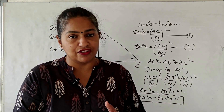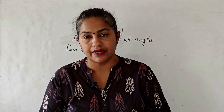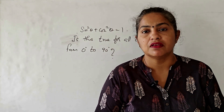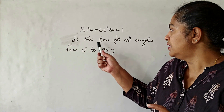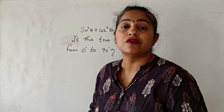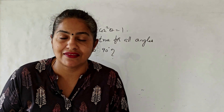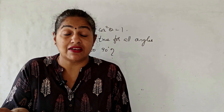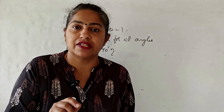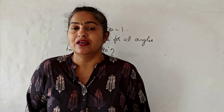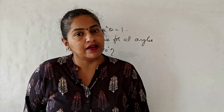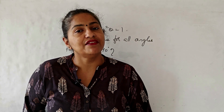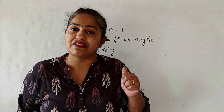Now we have learnt the identities and how to prove them. Let me ask you a question: sin²θ + cos²θ = 1 — is this true for all angles from 0° to 90°? When we say the identities, we just say sin²θ + cos²θ = 1, sec²θ - tan²θ = 1, etc., without thinking about whether they apply to all angles in the range 0° to 90°.